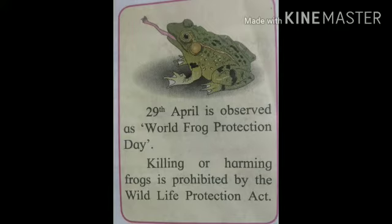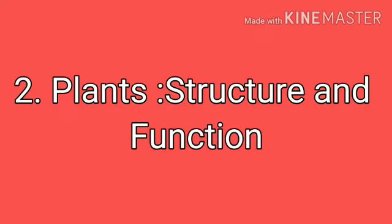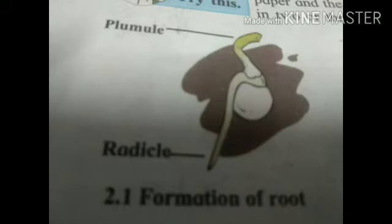World Frog Protection Day is observed on 29th April. Now, plant structure and function: as seen in this picture, the first part is the plumule and the lower part is the radicle. The plumule is the part that grows above the soil as the seed germinates, while the radicle is the part that grows from inside the seed towards the soil.